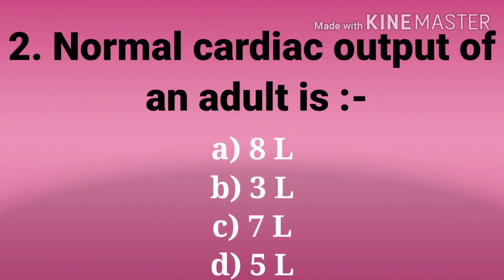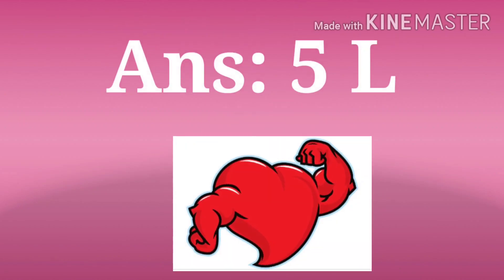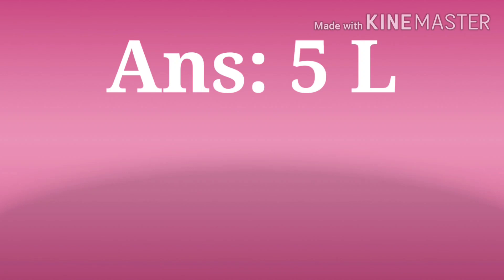Second question: normal cardiac output of an adult is. The options are 8 liter, 3 liter, 7 liter, 5 liter. And the answer is 5 liter. The cardiac output is the amount of blood the heart pumps through the circulatory system in a minute. So normal cardiac output is 5 liter.